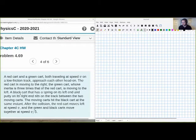A black cart, oh there's a third one, that has a spring on its left end and putty on its right end, sits on the track between the two moving carts. The moving carts hit the black cart at the same instance. After the collision, the red cart moves left at speed v and the green and the black carts move together at speed v over five. Yeah, this is a legitimately pretty complicated problem.